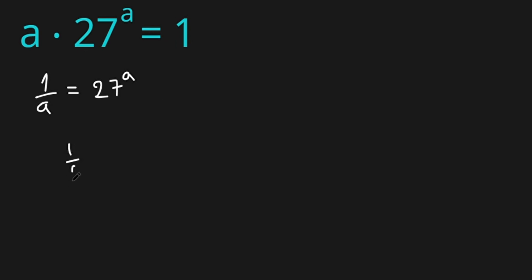So we have 1 over a all this to the power of 1 over a equals 27 to the power of a, all this to the power of 1 over a.